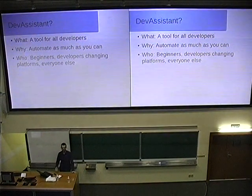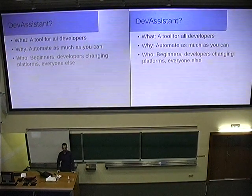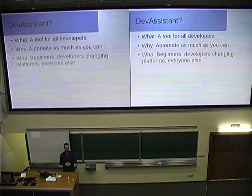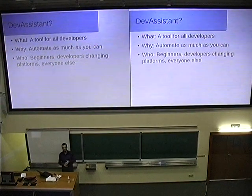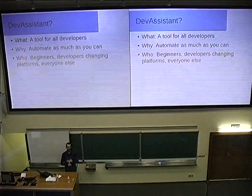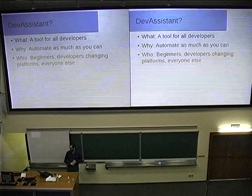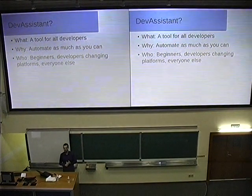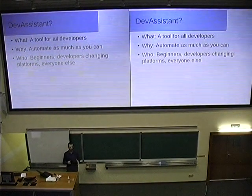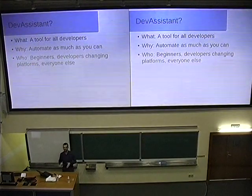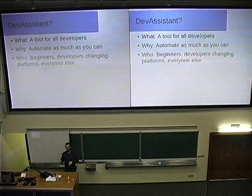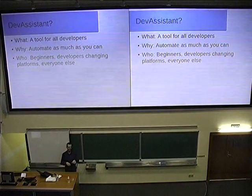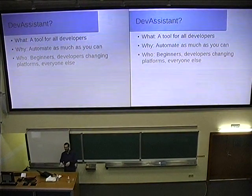And so that's how I got the idea of DevAssistant, which is basically a tool that's meant to help developers with their everyday tasks like dependency installation, setting up environment, scaffolding source code, working with repositories and stuff like that. The motto is automate as much as you can. Because the things that can be automated, we should automate. Because we want to spend all of our working time on doing the real development.